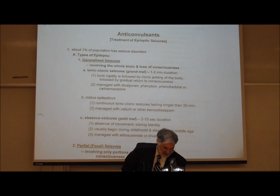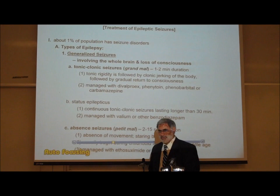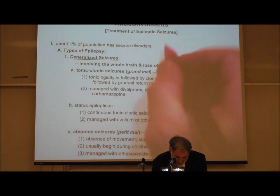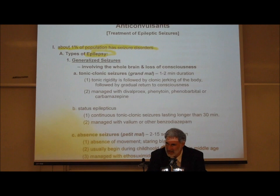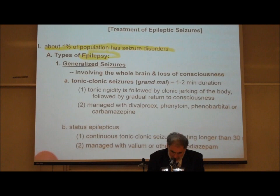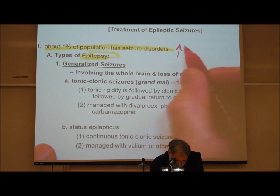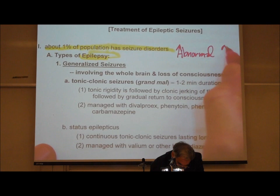Anticonvulsant drugs, also called antiepileptic drugs, are obviously used for epilepsy. What is epilepsy? What's the difference between a seizure and a convulsion? Epilepsy is associated with seizures. About 1% of the population has these seizure disorders, and that's called epilepsy. A seizure is associated with an abnormal increase in electrical activity in the brain.